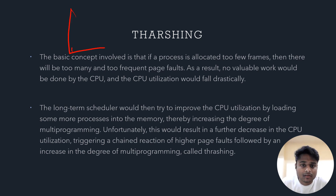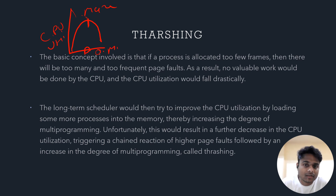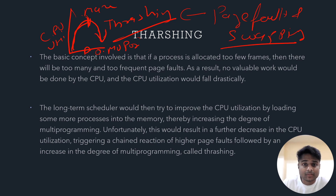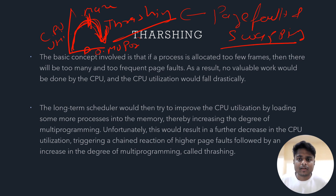In the graph, the CPU utilization is on one axis and degree of multi-programming on the other. When CPU utilization is at its maximum, it will suddenly drop down — and this is called thrashing. This all happens during page fault and swapping. When too many page faults occur and too many swaps happen, CPU utilization suddenly decreases.